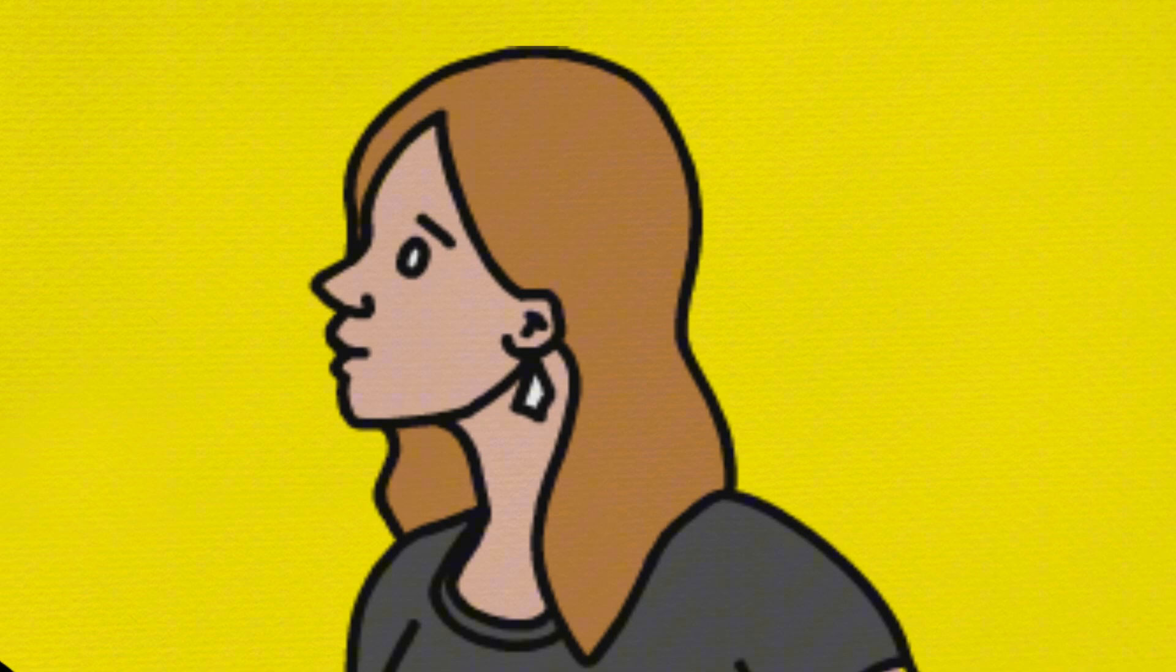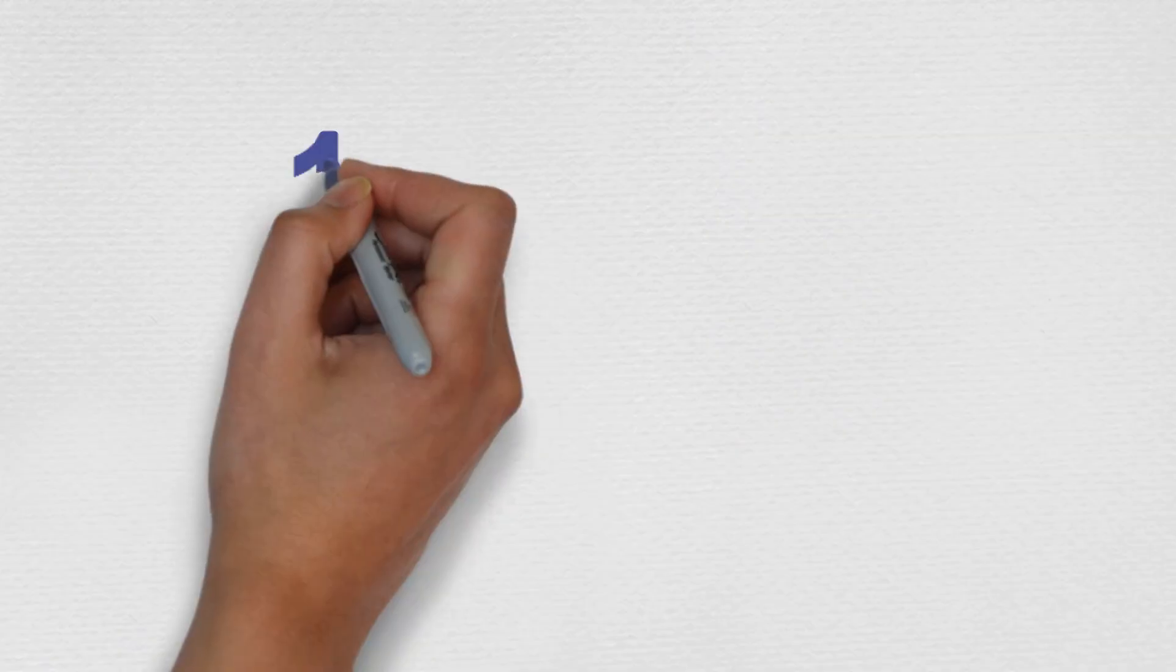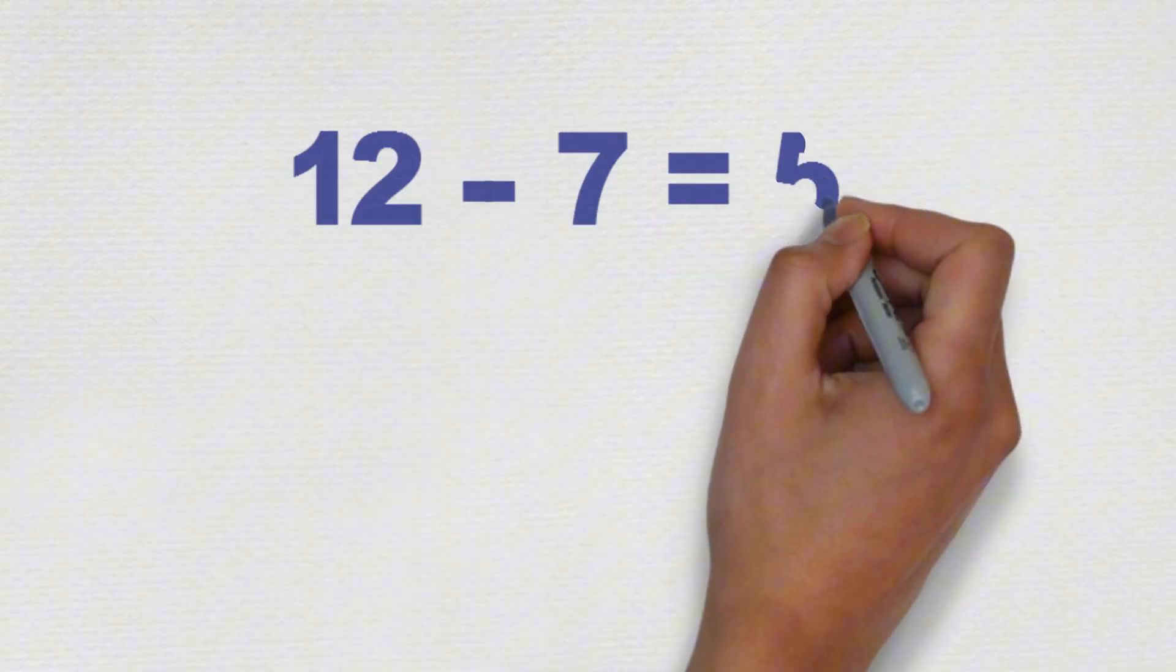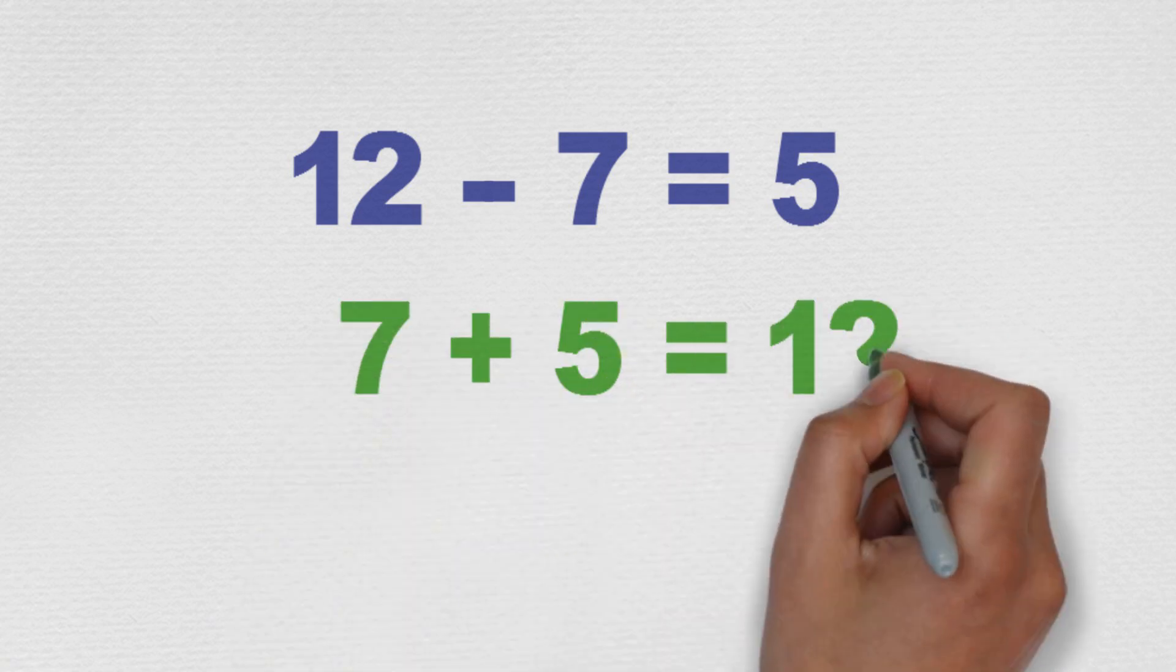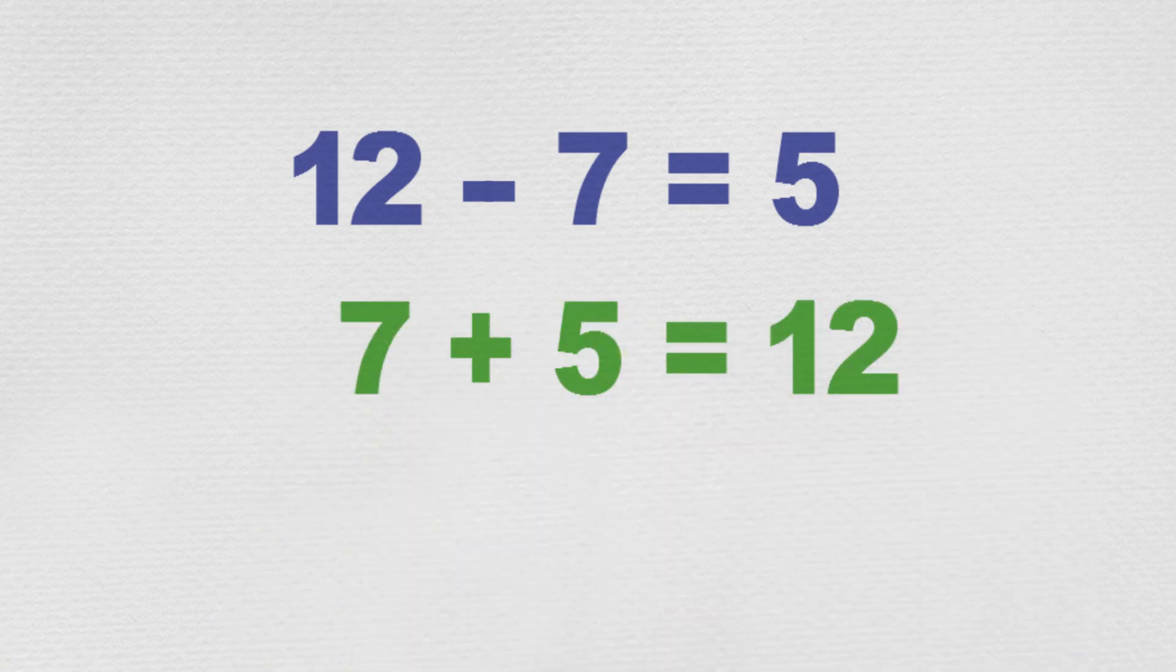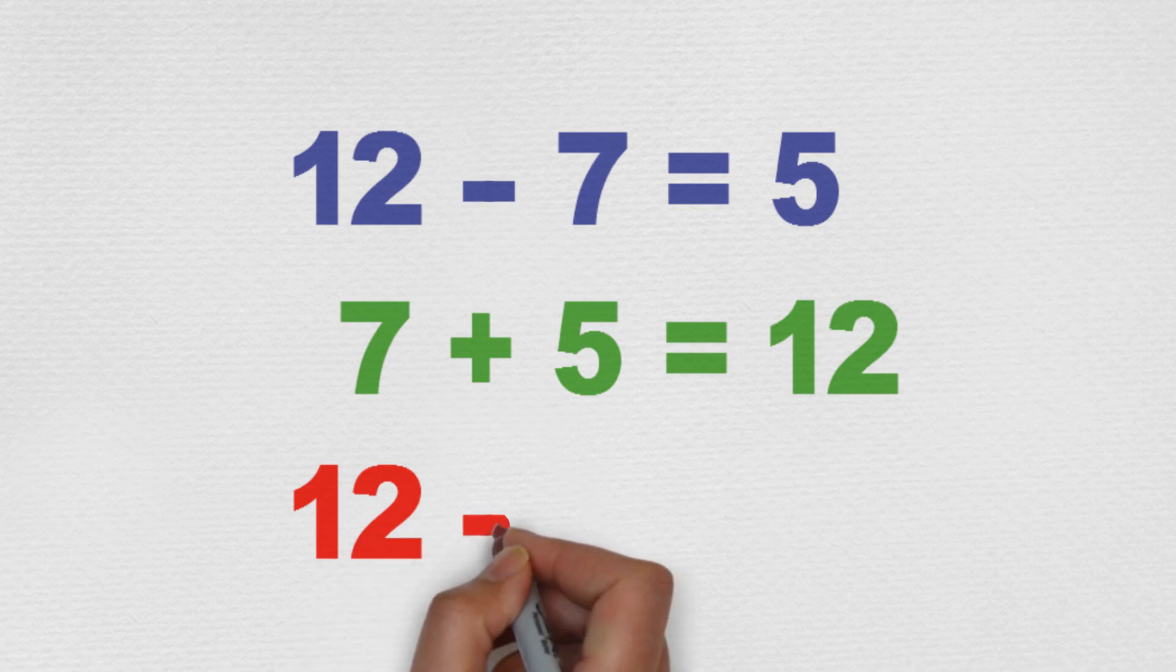Adding and subtracting numbers can be related. What I mean is, if 12 minus 7 equals 5, then 7 plus 5 equals 12, and 12 minus 5 equals 7.